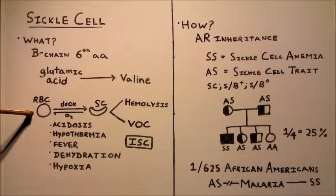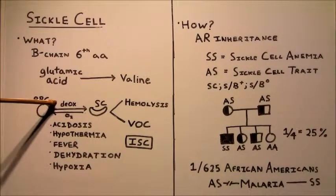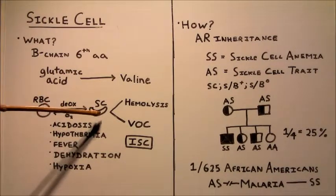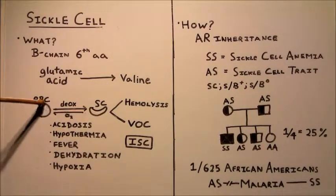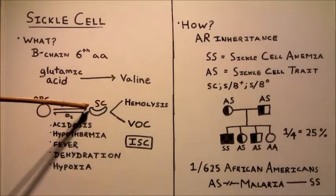So here's a normal red blood cell. So in the deoxygenated state, meaning that hemoglobin is not bound to oxygen. In this state, the hemoglobin clumps together and aggregates. So this clumping of the hemoglobin causes the red blood cell to take on a sickle shape. So it looks like this.